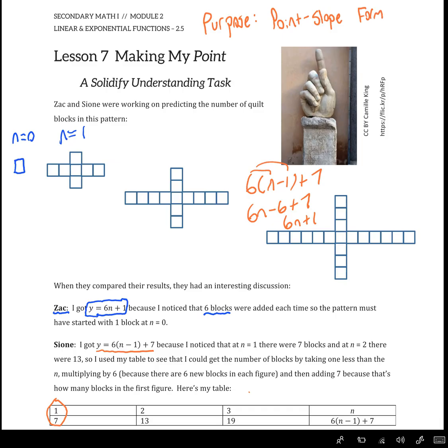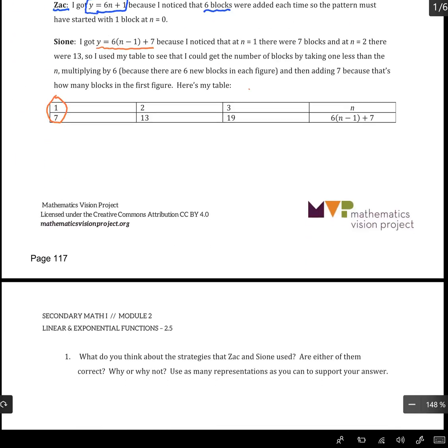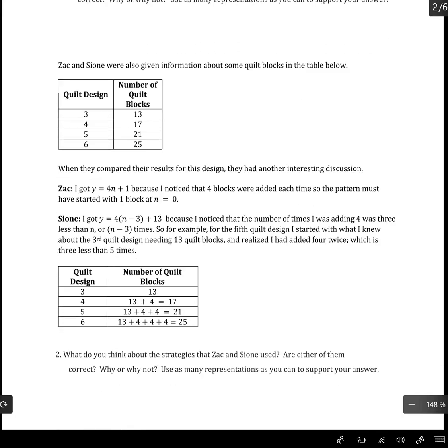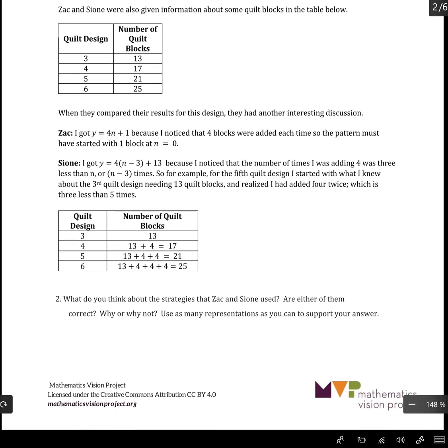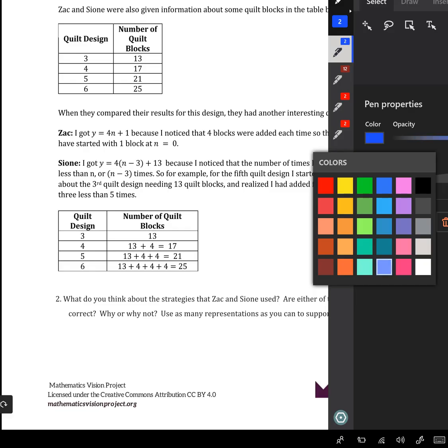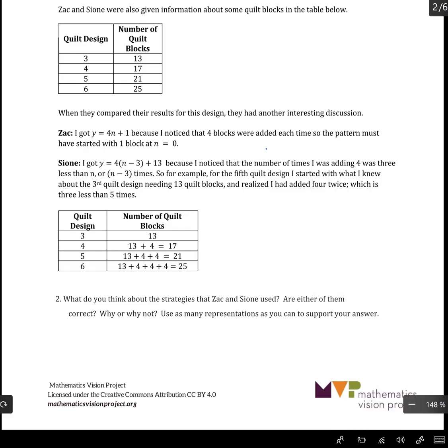So if we keep on going, we can see that this idea of the n minus 1 adjustment can also be applied at other values of n. So here's the table where it starts at n equals 3. So again, Zac is thinking of it as, well, let me work my way back to figure out how many blocks there would have been to start with. It's still adding 6 each time. I'm sorry, this time it's adding 4 each time.